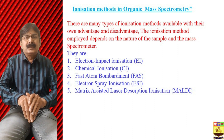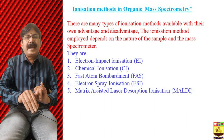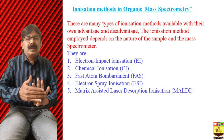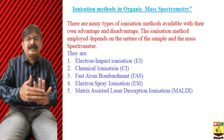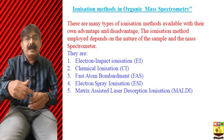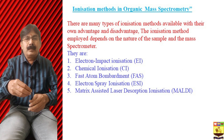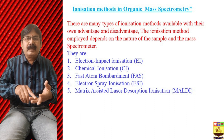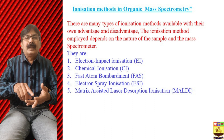The five ionization techniques are: one, electron impact ionization; two, chemical ionization; three, fast atom bombardment technique; four, electrospray ionization technique; and five, matrix-assisted laser desorption ionization technique. Which technique is used depends upon the nature of the sample — its volatility, molecular weight, and polar nature — and the spectrometer available.